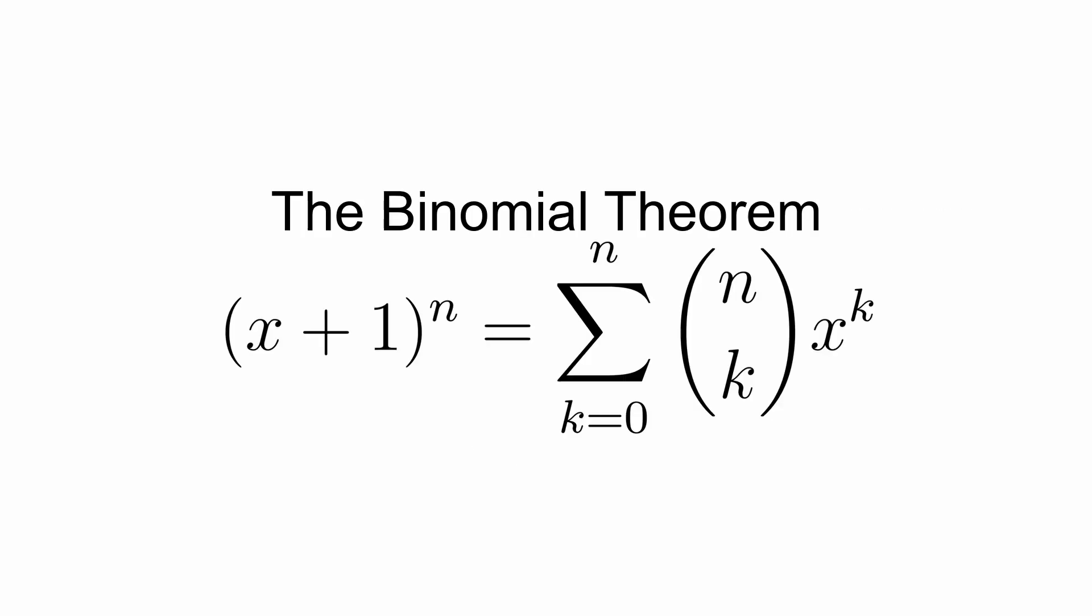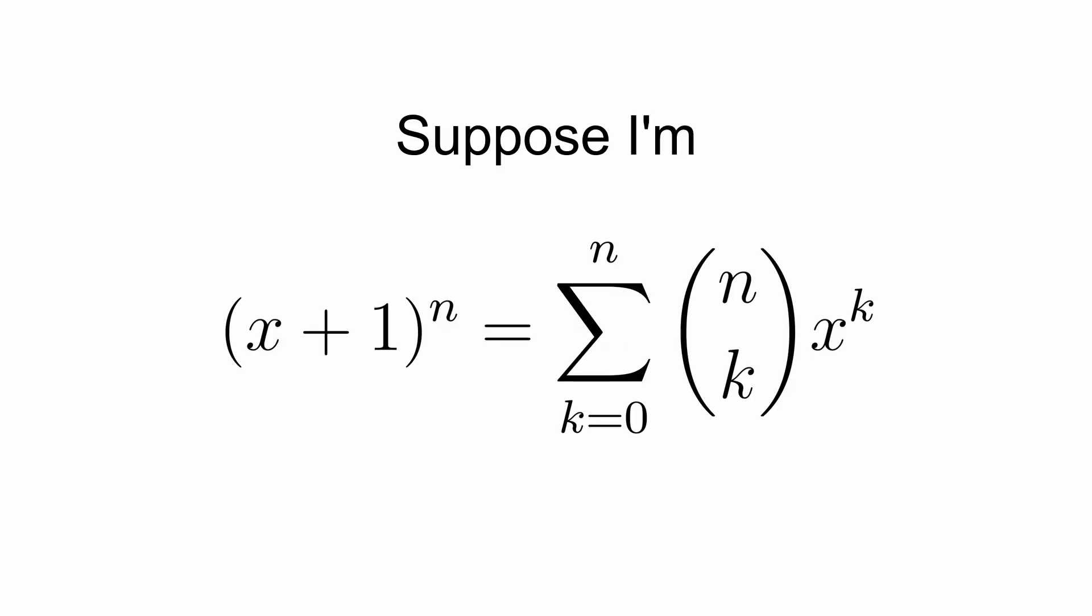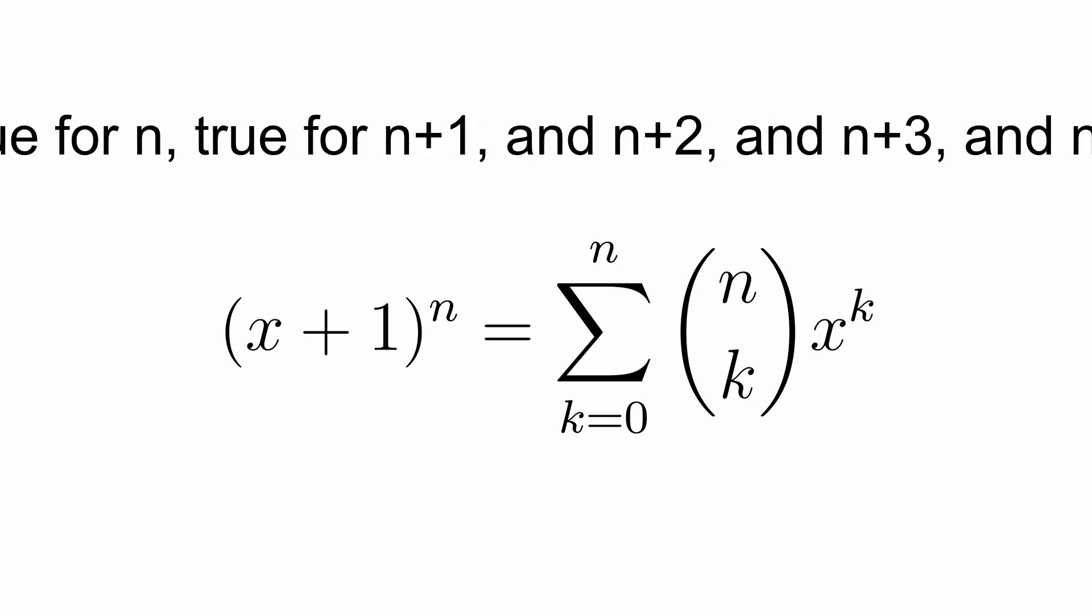The way you might first learn to prove the binomial theorem may be the algebraic approach of induction. You suppose the coefficients of the expansion follow what I've told you with the binomial theorem, then show that if it works for one of the expansions, the rest must follow the same pattern.